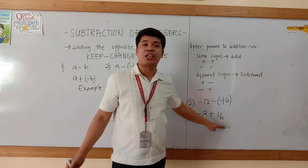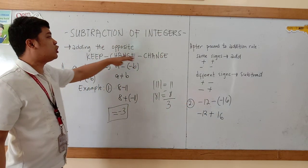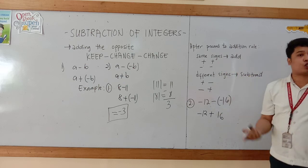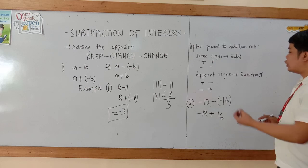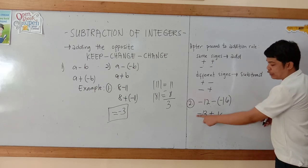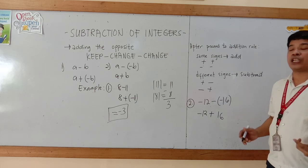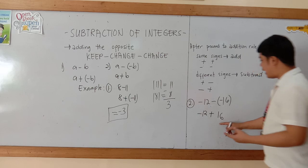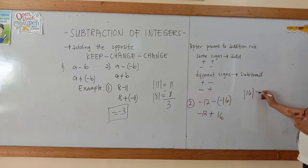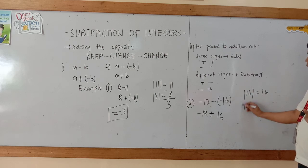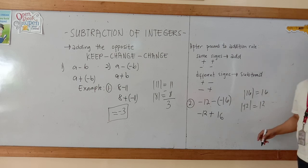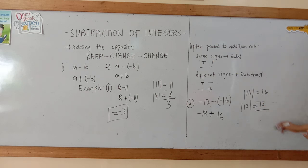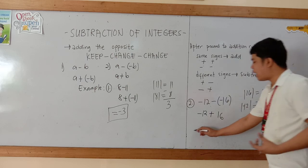After doing this technique — keep, change, change — we need to proceed to the addition rule. Remember, if they have the same signs, we need to add the integers; if they have different signs, we need to minus the integers. So our first integer is negative 12 and our second integer is positive 16. Since they have different signs, we minus: absolute value of 16 is 16, absolute value of negative 12 is 12. So 16 minus 12 equals 4, that is our answer here.